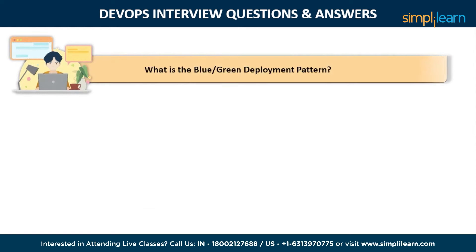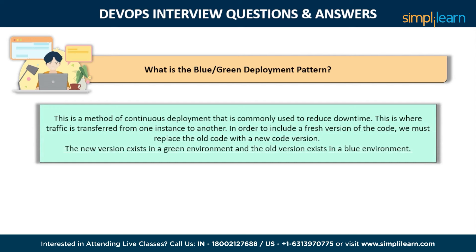The next question is: what is the blue-green deployment pattern? This is a method of continuous deployment commonly used to reduce downtime, where traffic is transferred from one instance to another. In order to include a fresh version of the code, we replace it with the new code version. The new version exists in a green environment, and the old version exists in a blue environment. After making changes to the previous version, we need a new instance from the old one to execute a newer version.